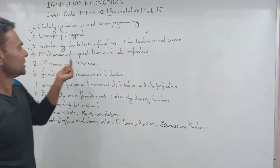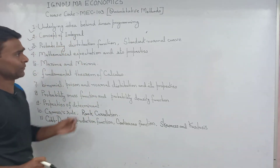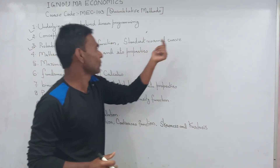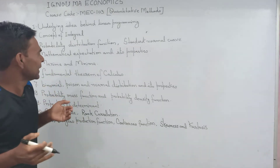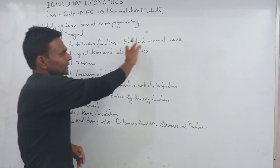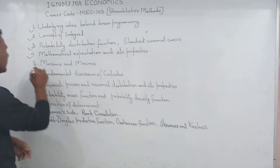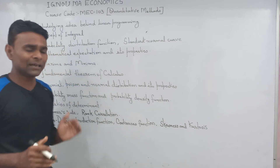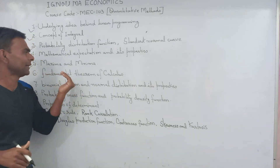What do you understand by mathematical expectation and its measure property? And what do you understand by maxima and minima? What are the necessary and sufficient conditions for maximum and minimum?